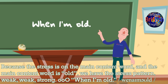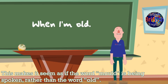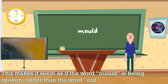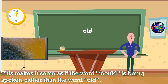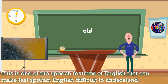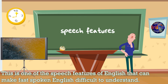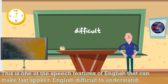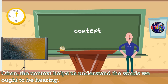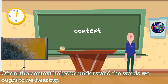When I'm old. This makes it seem as if the word "mould" is being spoken rather than the word "old." This is one of the speech features of English that can make fast spoken English difficult to understand.